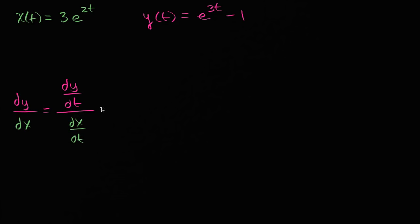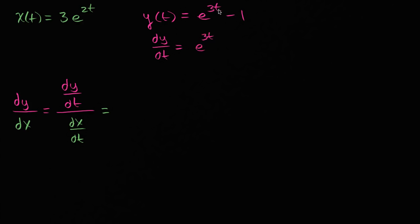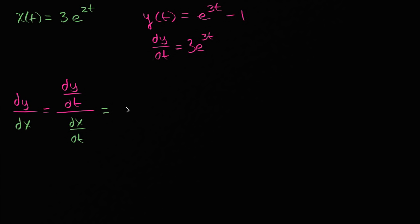So this is going to be equal to: what is the derivative of y with respect to t? dy/dt — the derivative of e to the 3t with respect to 3t is just e to the 3t, and then the derivative of 3t with respect to t is going to be three, so that's three out front. The derivative of negative one, a constant, is just zero. So dy/dt equals three e to the 3t.